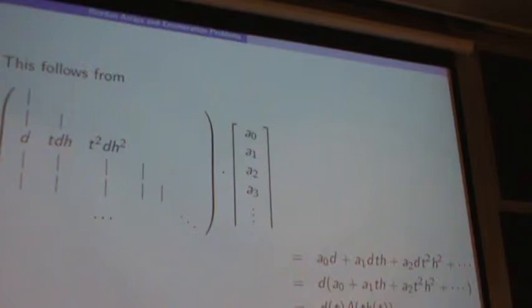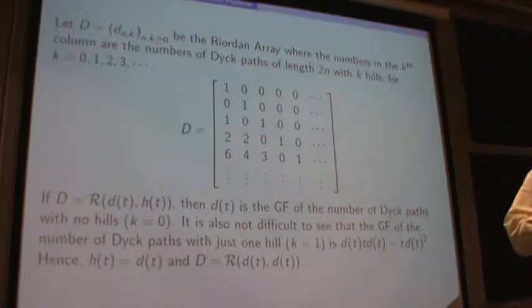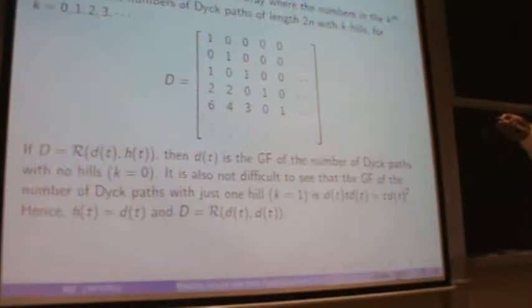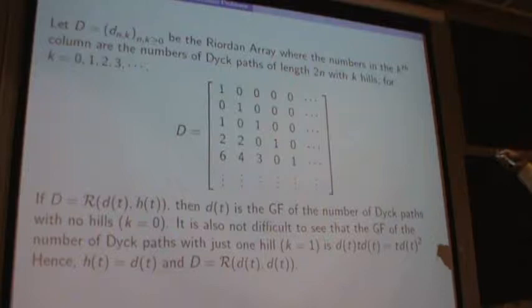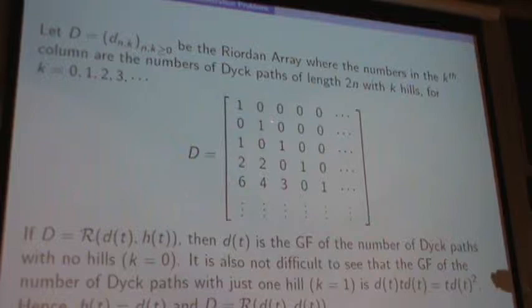Now let's form a new Riordan array where the numbers in the K-th column — K starting from zero — are the numbers of Dyck paths of length 2N with K peaks. We are about to form an infinite lower triangular matrix that will serve our purpose here. So D(n,k) is obtained by simply taking the K-th column to be the number of Dyck paths of length 2N with K peaks. For example, the first column is Dyck paths with no peaks and the next is Dyck paths with one peak, and so on.